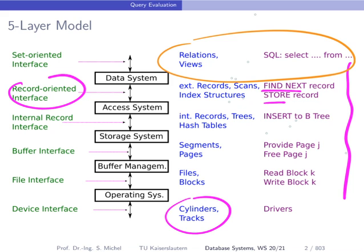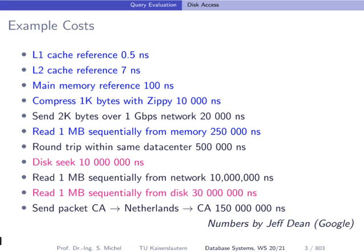In the current course, we want to understand a little bit better the internal routines of database systems in order to understand where performance improvements can be achieved and which aspects lead to bad performance. When we talk about performance, we also have to understand what kind of cost we have to expect on certain operations. This chart was created by Jeff Dean of Google, and he put together some numbers to give you a feeling for the individual costs.